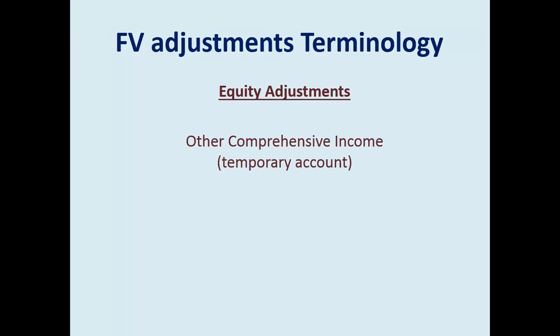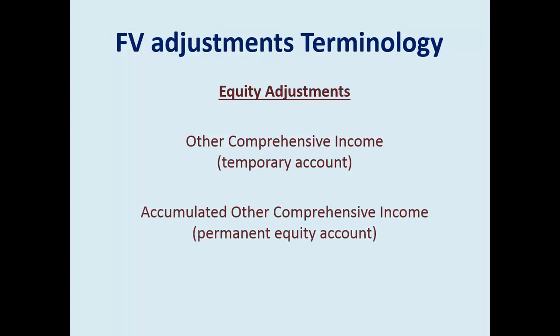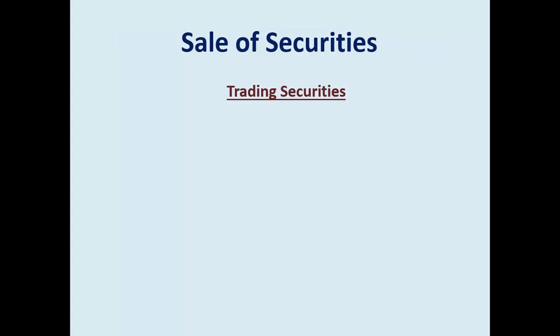Other comprehensive income is a temporary account, just like income summary. You close revenues and expenses to income summary, then close income summary to retained earnings. With other comprehensive income, it's a different temporary account that closes to accumulated other comprehensive income (AOCI). Think of AOCI as very similar to retained earnings — that permanent equity account. This allows you to maintain true earnings as opposed to fair value or valuation adjustments.